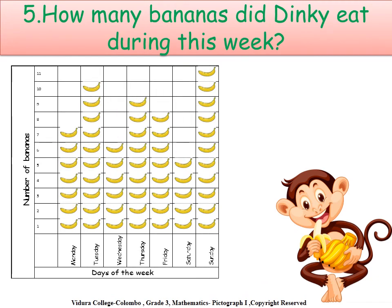The last question: how many bananas did Dinky eat during this week? To find the total, we add all the bananas he ate — seven on Monday, ten on Tuesday, six on Wednesday, nine on Thursday, eight on Friday, five on Saturday, and eleven on Sunday. Seven plus ten plus six plus nine plus eight plus five plus eleven — the answer is fifty-six. He ate fifty-six bananas during this week.